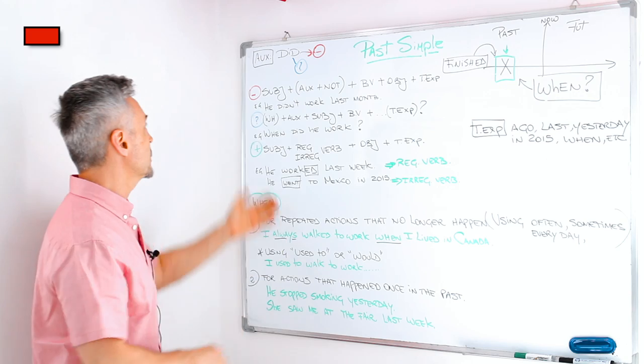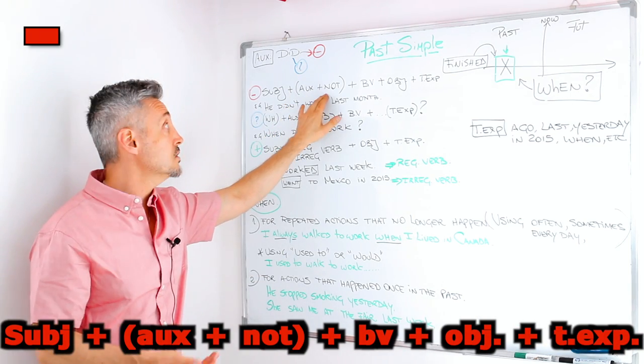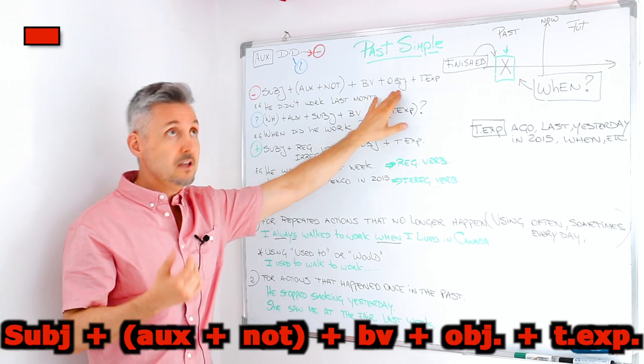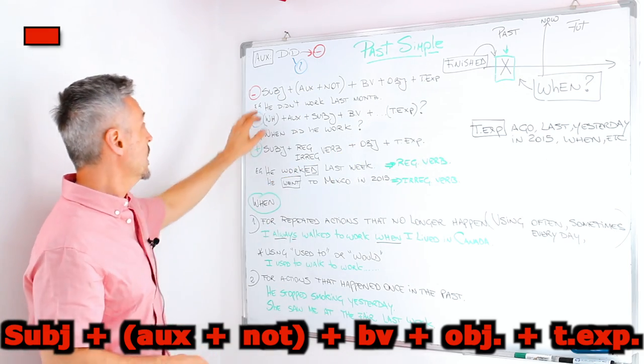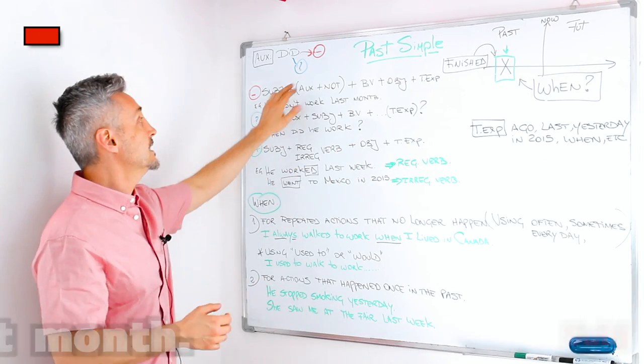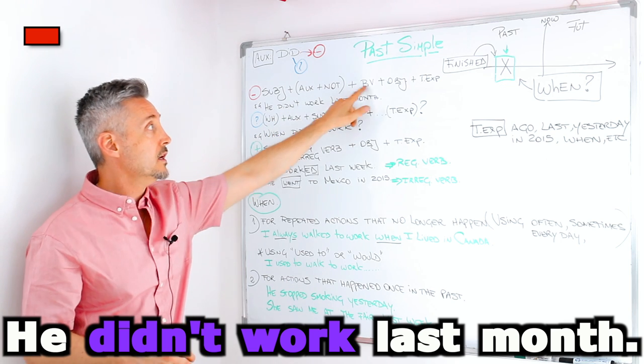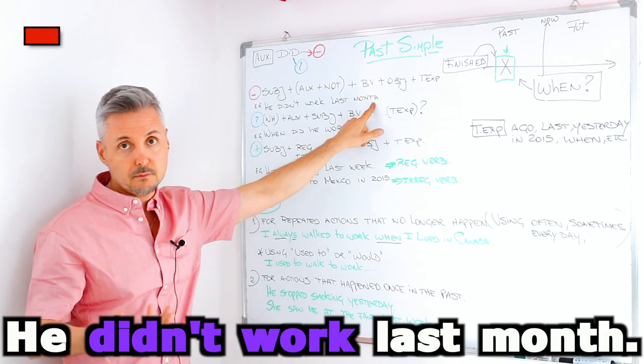Let's look at the formulas. We have the subject first. Then we have the auxiliary plus not. Then the base of the verb. Then the object. And then the time expression, if any. An example: He didn't, so he did not. He didn't work. Base of the verb to work. Last month. Easy.